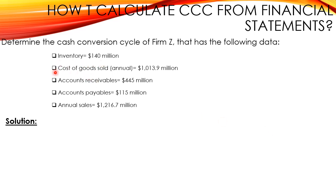Inventory: $140 million. Cost of goods sold annual: $1,013.9 million. Accounts receivables: $445 million. Accounts payables: $115 million. And annual sales: $1,216.7 million.